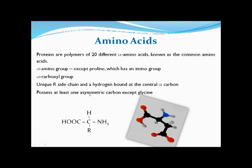An important property of amino acids is that they possess at least one asymmetric carbon — except glycine. Glycine lacks an asymmetric carbon because if you look at its structure, the central carbon has two hydrogen atoms attached. Because this carbon has two hydrogens, it is symmetric, not asymmetric. So glycine does not have an asymmetric carbon.